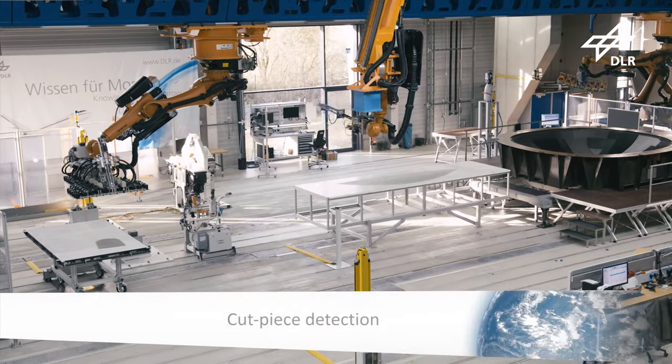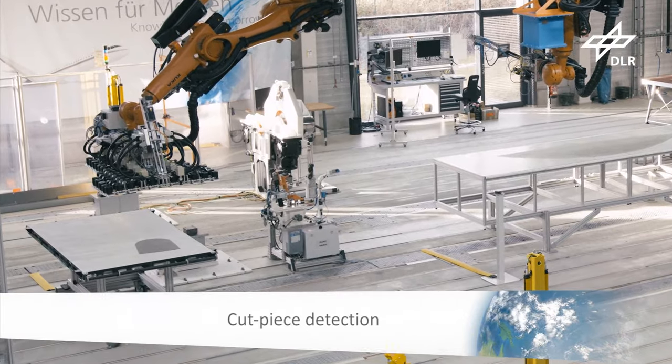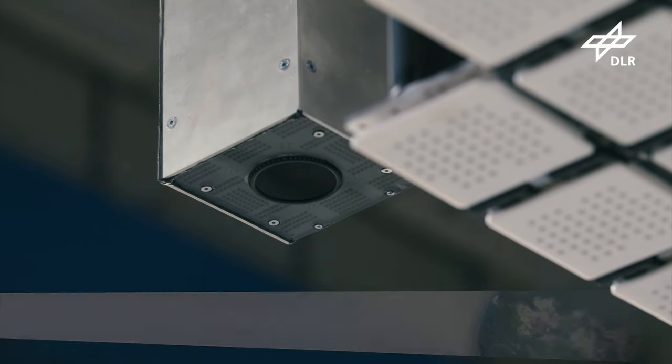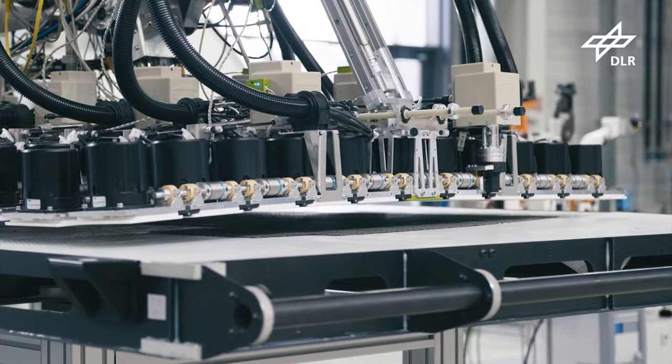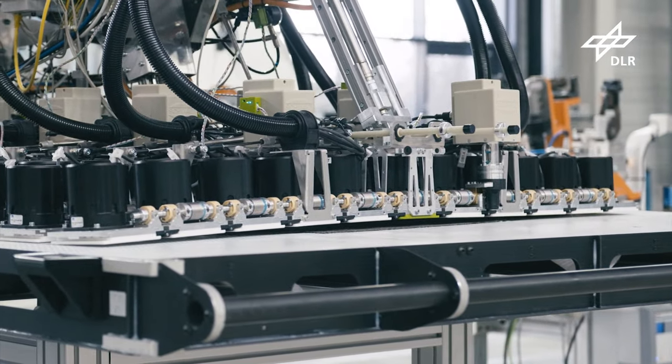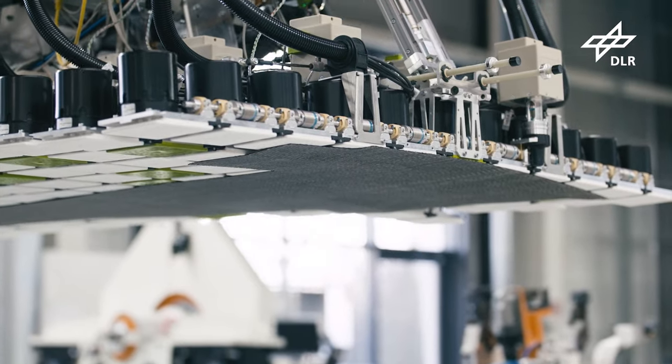The modular gripper recognizes the shape and the exact position of the cut piece. The patch is autonomously approached by the gripper, picked by its 127 section modules and transferred towards the tool.